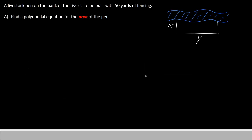In this problem, we have a livestock pen to be built on the bank of a river with three sides: x, y, and another side that is also x. The fourth side will not be there because the river makes up the fourth side. Now, between the three sides that we have, we will have 50 yards of fencing. Part A of the question is to find a polynomial equation for the area of the pen.